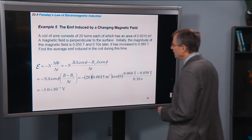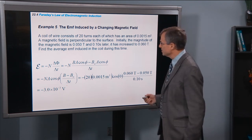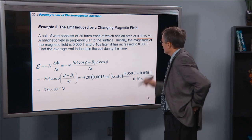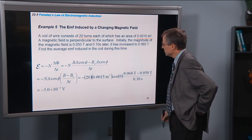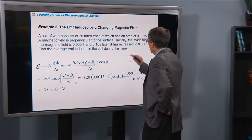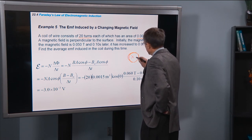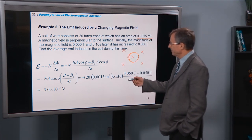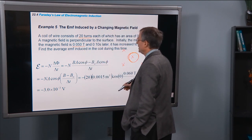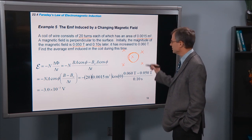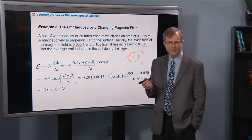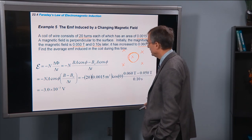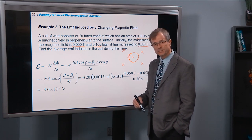Let's do an actual example. Coil of wire consists of 20 turns, so that's N. Each of which has an area of this area, the magnetic field is perpendicular to the surface. So here's my coil, magnetic field is perpendicular, let's say it's into the board. And the magnetic field is given 0.05 tesla, and 0.1 seconds later it has increased to 0.06 tesla. So we're starting off with a magnetic field with 0.05 tesla. A tenth of a second later it's 0.06 tesla. And we're wanting to try and find the EMF in the loop.